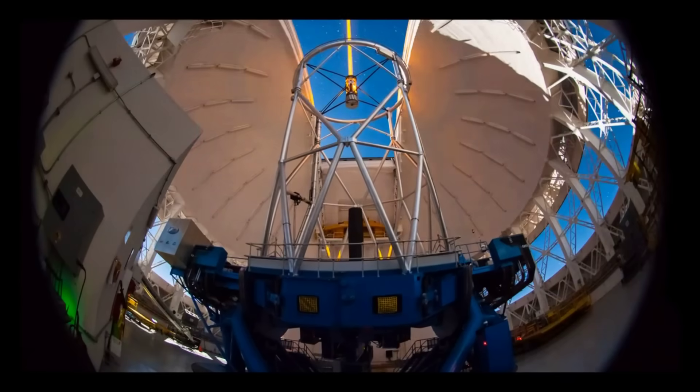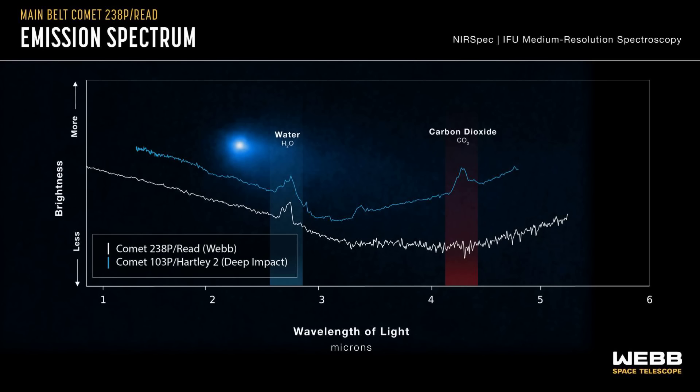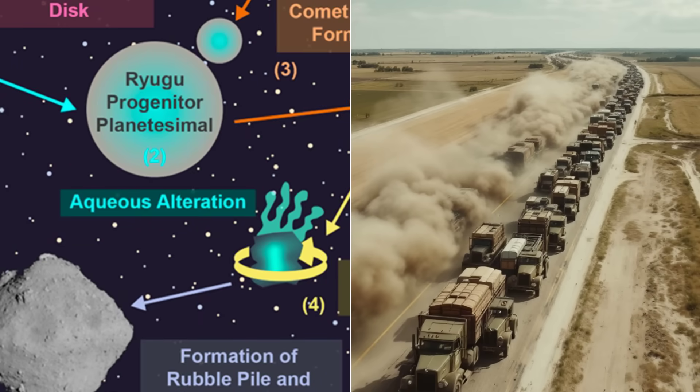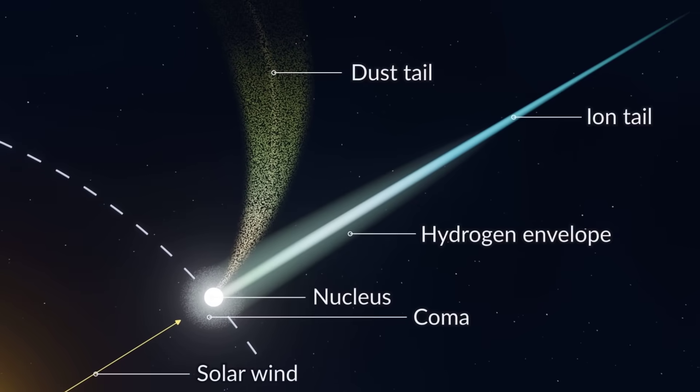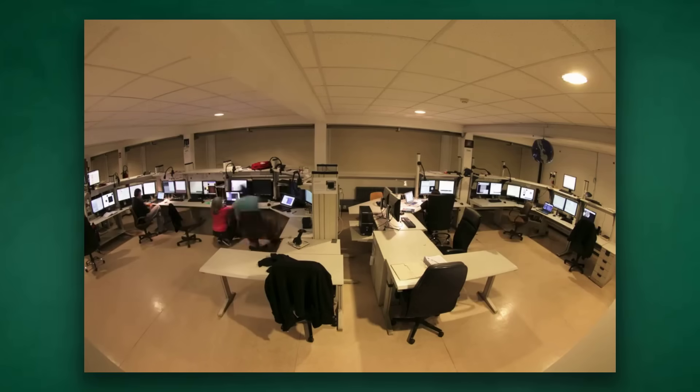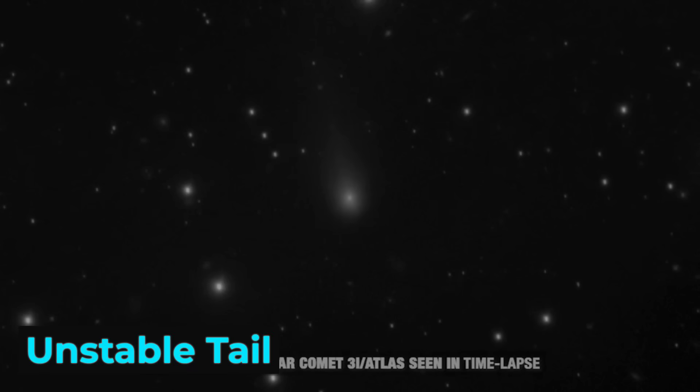The late-August imaging campaign is a race against time. Every spectrum, every color shift, is a potential fingerprint from another world. If the tail's chemistry keeps changing, it could challenge everything we thought we knew about how comets form, here or anywhere else. And with every new data point, the possibility of an anomaly grows. Scientists are watching for the unexpected, ready to rewrite the rules if 3I/ATLAS demands it.